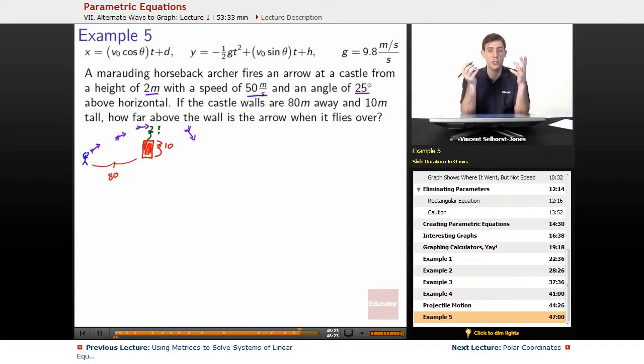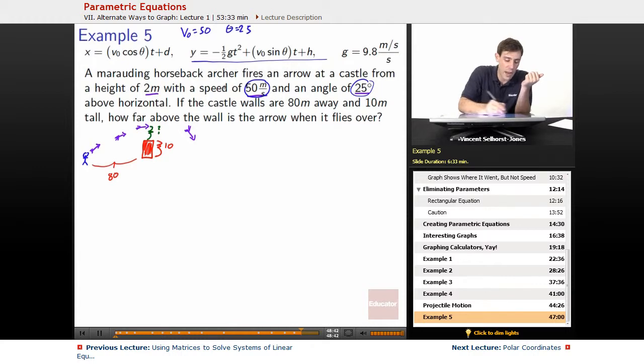When is the arrow above the wall? We've got this formula here. We can figure out what the height of the arrow is if we know the time. We know V0 equals 50 meters per second. We know theta equals 25 degrees. We know that its starting height was H equals 2, and we were given G. But we don't know what time it is before it makes it over those walls. So we first need to figure out when does it make it to the walls.